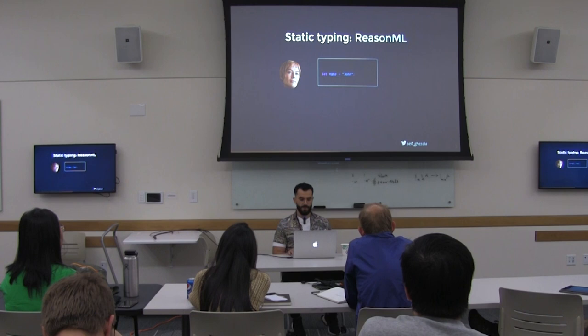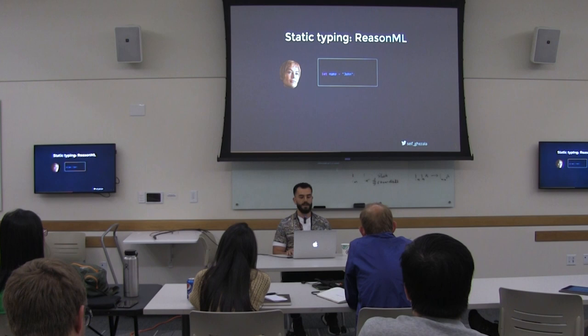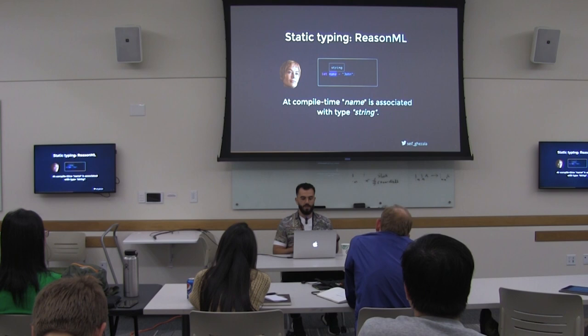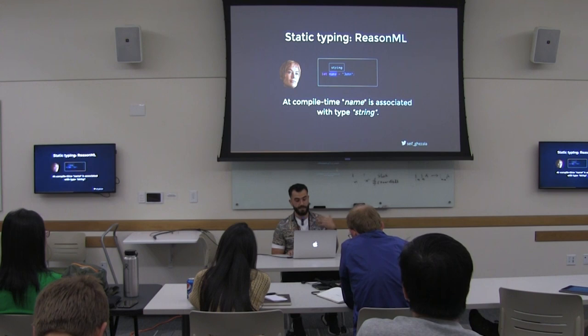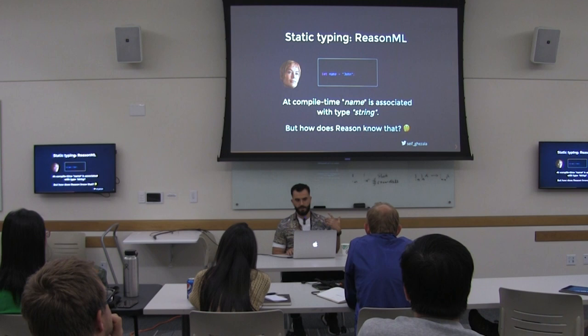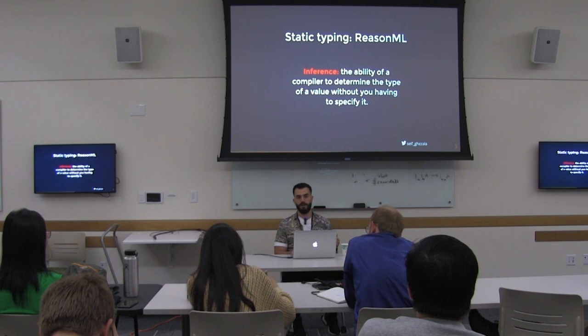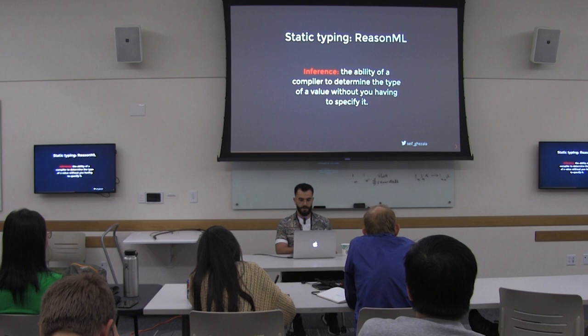Static typing is very different. In ReasonML, if you write `let name = 'John'` in the editor and hover over name, your editor will tell you this is a string — at the time you're writing your code. How is that possible? Because Reason at compile time can already guess the type of this variable. You might be wondering: we didn't tell the compiler anything about the type of name. How did it know? Well, it kind of inferred it — it guessed it. This is what we call type inference: the ability of a compiler to guess the type of a value at compile time without you having to give it any hints. ReasonML is really good with that.